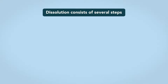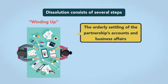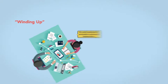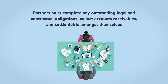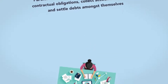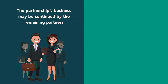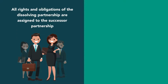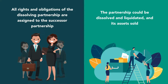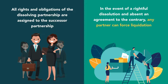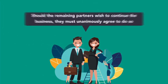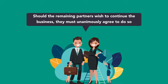Whatever the reasoning, dissolution consists of several steps. The first is winding up, which is the orderly settling of the partnership's accounts and business affairs. During this phase, partners must complete any outstanding legal and contractual obligations, collect accounts receivable, and settle debts among themselves. When the winding up process is complete, two possibilities arise: the partnership's business may be continued by the remaining partners, with all rights and obligations assigned to the successor partnership, or the partnership could be dissolved and liquidated and its assets sold. Should the remaining partners wish to continue the business, they must unanimously agree to do so.